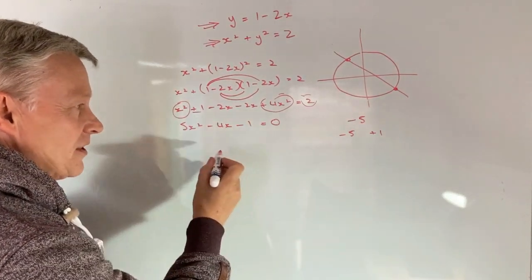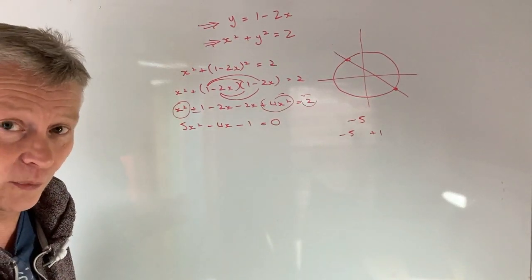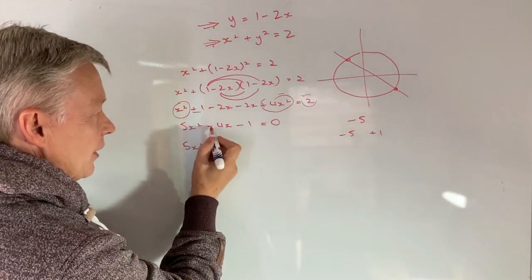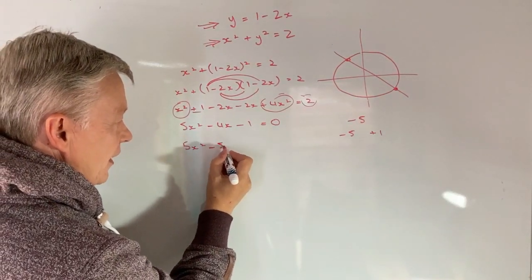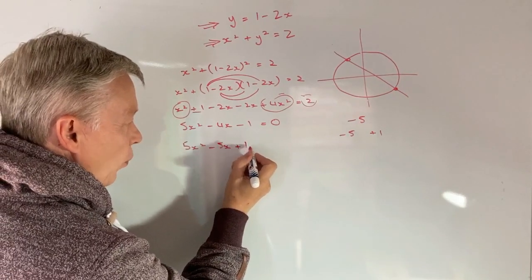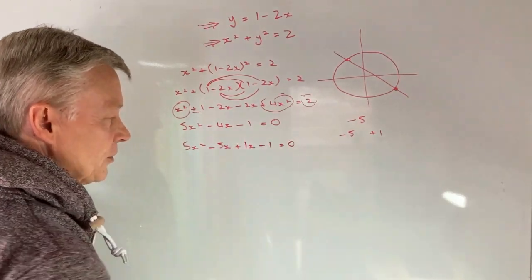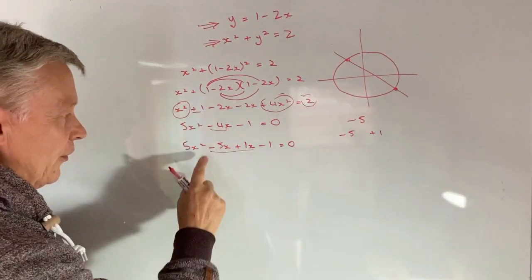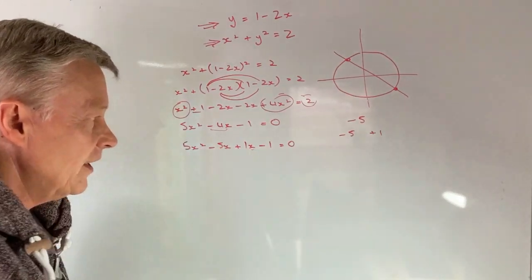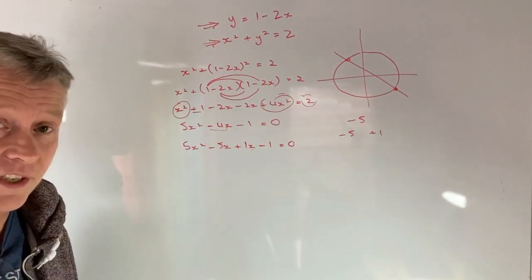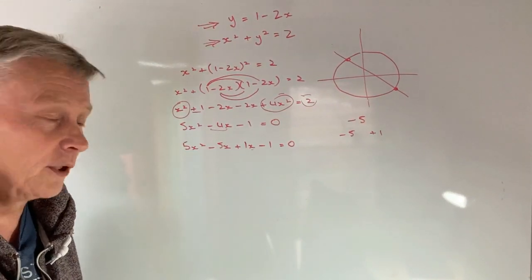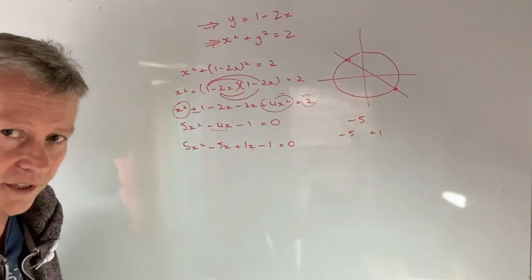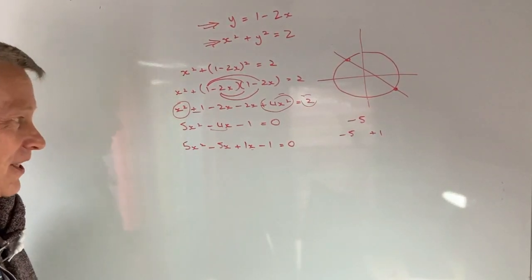So I can now look at this equation and rewrite it in a slightly different way. The way I'm going to write it is going to be 5x squared. And rather than writing minus 4x, I'm going to put minus 5x plus 1x minus 1 equals 0. So the only thing I've changed are these two become minus 4x. Now the next process with this is to factorize the first two terms. And what we're looking for is for a common factor of the first two terms and the second terms. Probably easier to demonstrate than it is to actually explain.